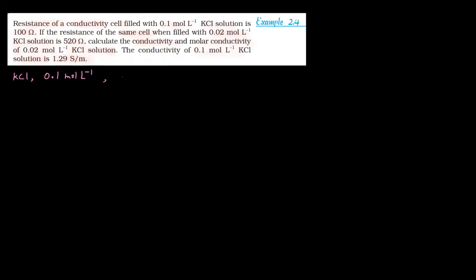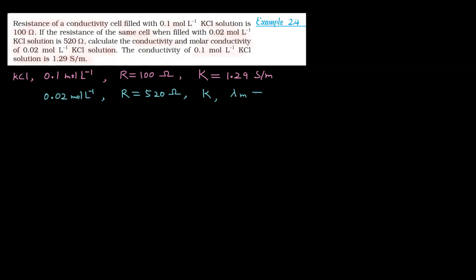Conductivity given है 0.1 mol per liter KCL solution की — 1.29 siemen per meter. यहाँ पर आप 2 solutions की बात कर रहे हैं। यहाँ पर note-down करेंगे: पहला KCL solution जिसकी concentration है 0.1 mol per liter, इसका resistance है 100 ohm, और इसकी conductivity κ given है — 1.29 siemen per meter (siemen is ohm inverse). दूसरा KCL solution जिसकी concentration है 0.02 mol per liter, तो resistance आया 520 ohm। इस solution की conductivity κ और molar conductivity λm calculate करना है।